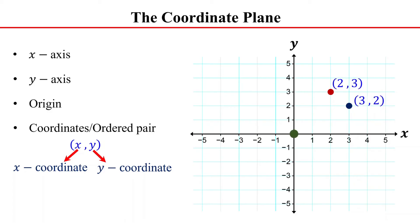The origin, where the x-axis and y-axis intersect, is represented by the ordered pair 0 comma 0. At this point, both the x and y-coordinates are 0.